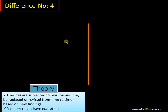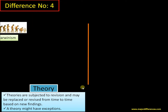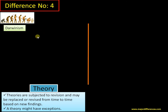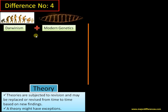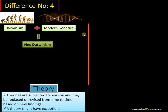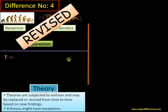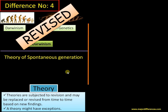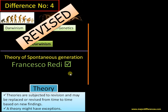Difference number four: theories are subject to revision and may be replaced or even rejected based on new findings, and there are many exceptions. Take Darwinism — at the time of Darwin, he didn't know about the role of genes in inheritance. By adding knowledge from modern genetics, it became neo-Darwinism. Also, the theory of spontaneous generation — believed until the 18th century — held that life originated spontaneously from water, dead leaves, or muddy pools. This was disproved by Francesco Redi's and Louis Pasteur's experiments, so the theory was rejected.